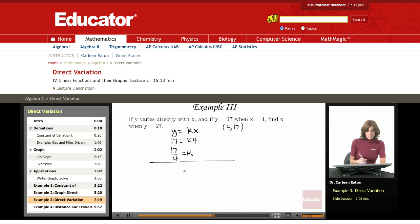So I have my constant variation. And I can go back and look at what I'm being asked. What I want to do is find x when y equals 27. And I now have this piece of information that k equals 17 over 4.